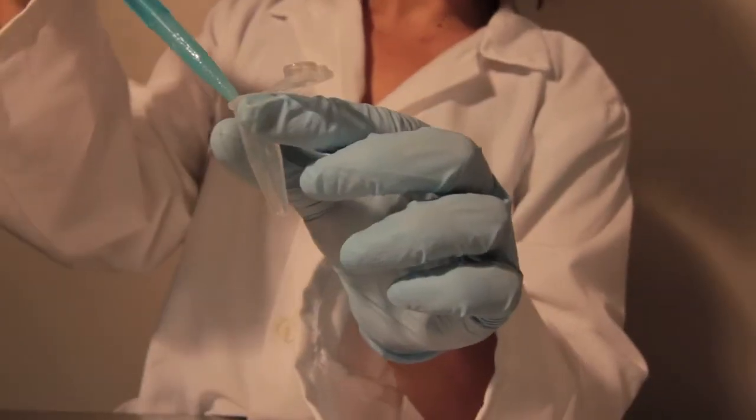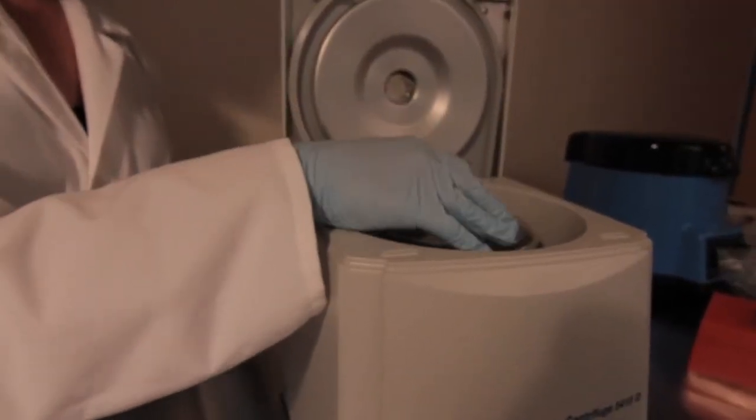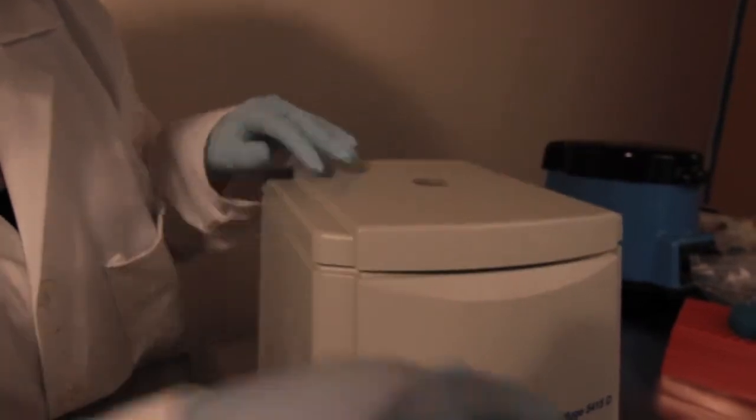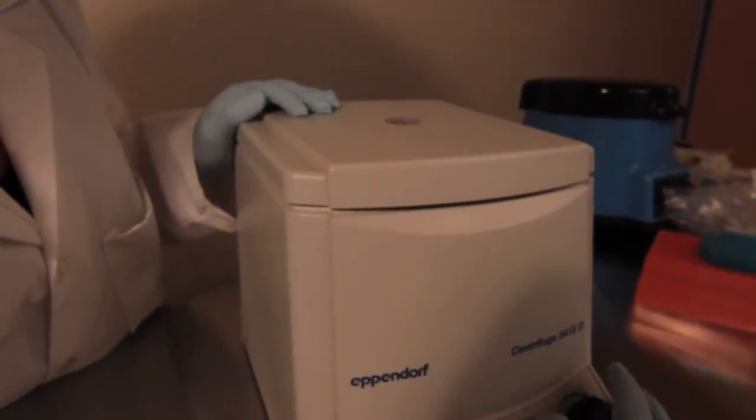First, harvest your cells and spin them down to yield a pellet. If you're homogenizing your cells in 1.5 milliliter microcentrifuge tubes, we recommend that the volume of your pellet be no larger than 300 microliters.